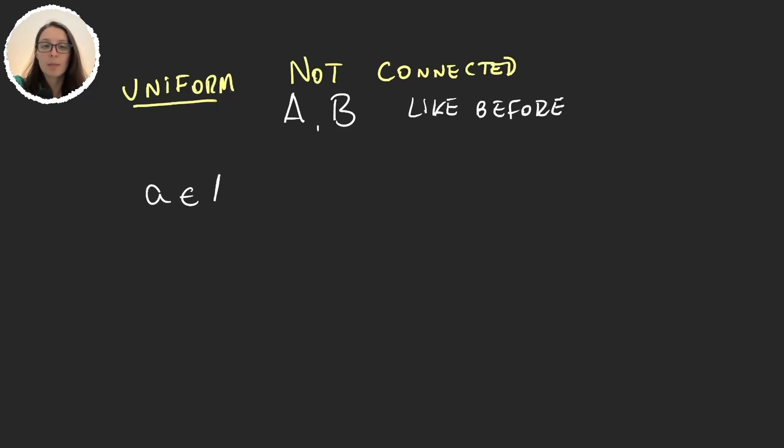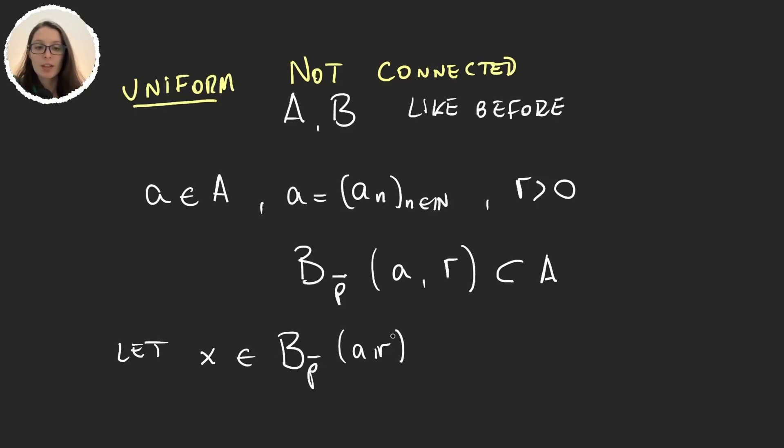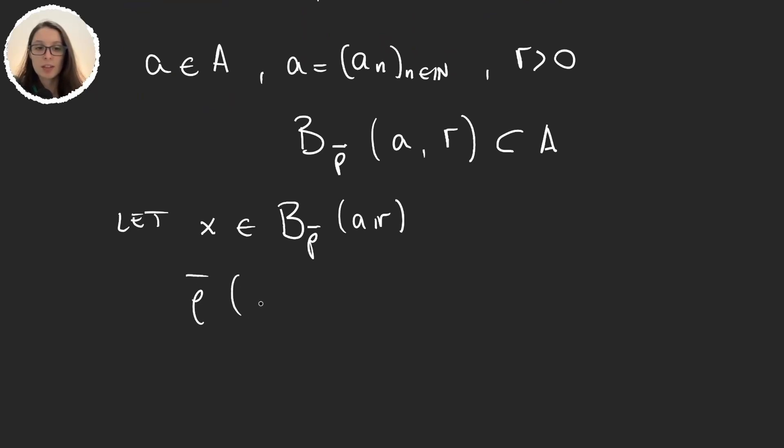For this let's take A an element in A, so a bounded sequence, and let's take a positive number R. We will prove that if we take the ball constructed with a uniform metric with center in A and radius R, then this ball is completely contained in A. So let's take x an element here, but if x is here that means that the distance between x and A is smaller than R, and then this means that the bounded metric between each of the components is also smaller than R. But then if this happens then the sequence x_n is also bounded because A was bounded and x is not further away than R from the sequence of A, and so A is open.